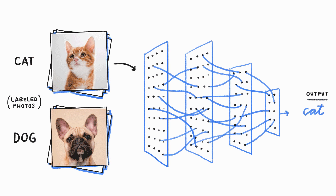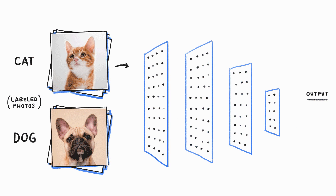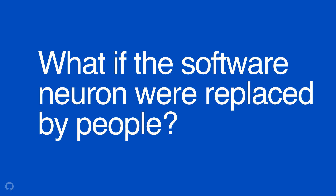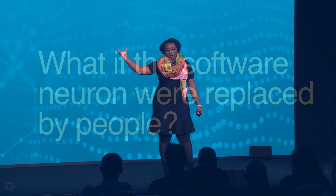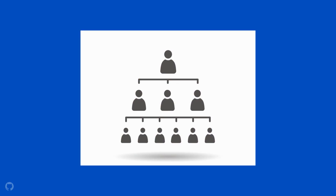Now, what if the software neurons were replaced by people? With the same architecture — layers, activation function, and a feedback mechanism that tells you whether you're strengthening or diminishing the activation between your neurons — what would it look like?